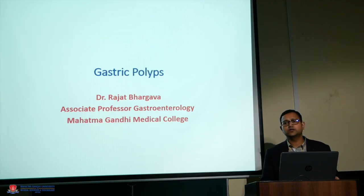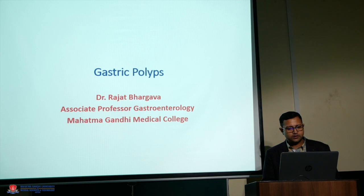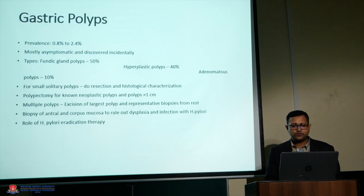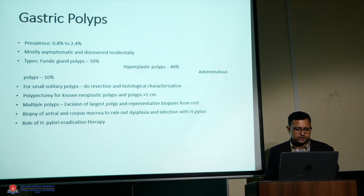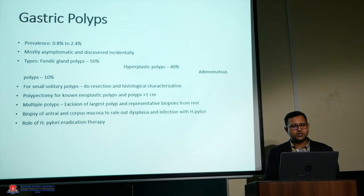Good afternoon everyone. Today we'll discuss a very common finding on routine endoscopy called gastric polyps. In the stomach, whenever we find any mucosal excrescences, they are termed as mucosal outgrowths or gastric polyps. It's a very common finding — its prevalence ranges from 0.8 to 2.4 percent. This data comes from endoscopic studies because these polyps are very small and cannot be detected on most CT scans or MRIs.